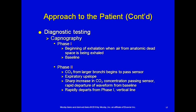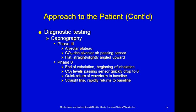When we look at a capnogram — capnometry refers to the number, capnography refers to the graph — there are four phases. Phase one is the beginning of exhalation when air from anatomical dead space is exhaled; that's your baseline and should not rise because anatomic dead space has no CO2. Phase two is the expiratory upslope, where CO2 from the larger bronchi begins passing the sensor, causing a rapid departure of the waveform from baseline. Phase three is the alveolar plateau, where CO2-rich alveolar air passes over the sensor — flat, straight, slightly angled upward.